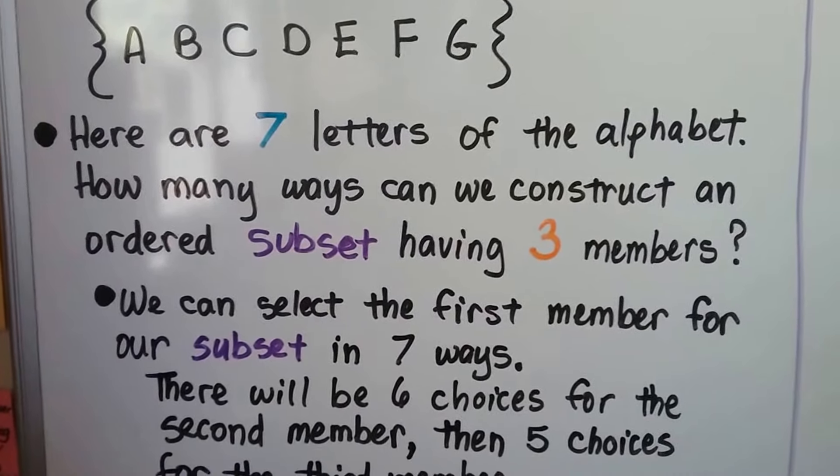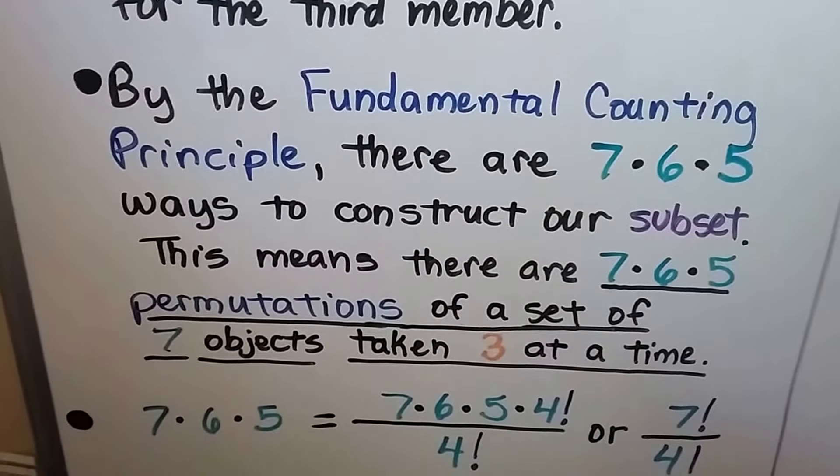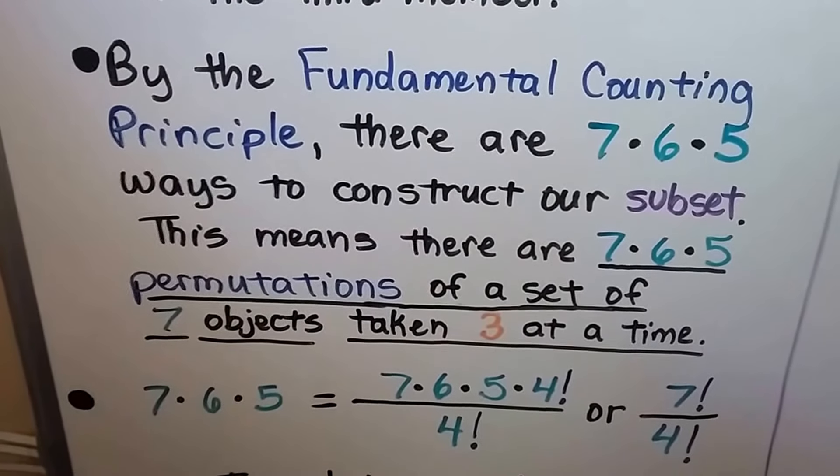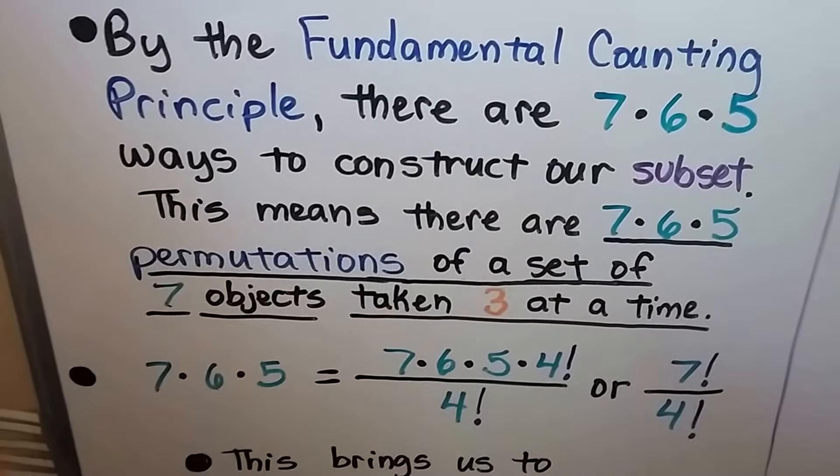By the fundamental counting principle, there are 7×6×5 ways to construct our subset. This means there are 7×6×5 permutations of a set of seven objects taken three at a time.